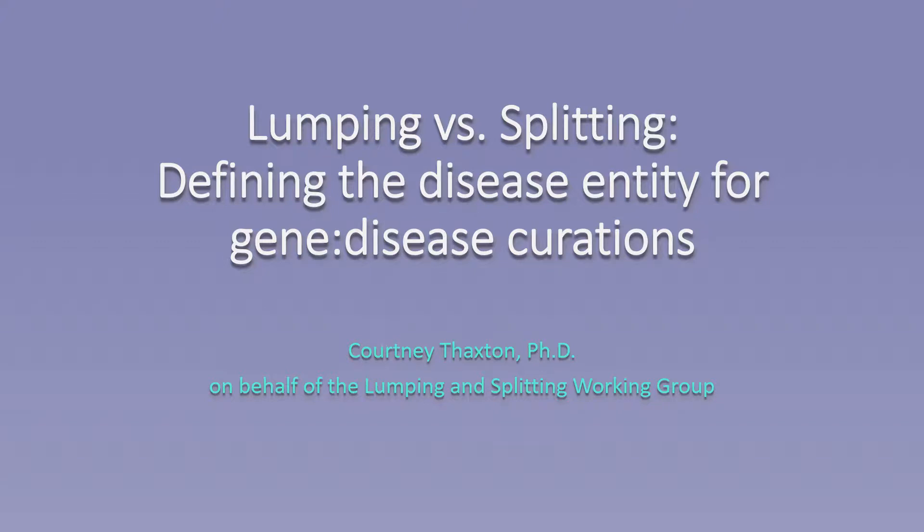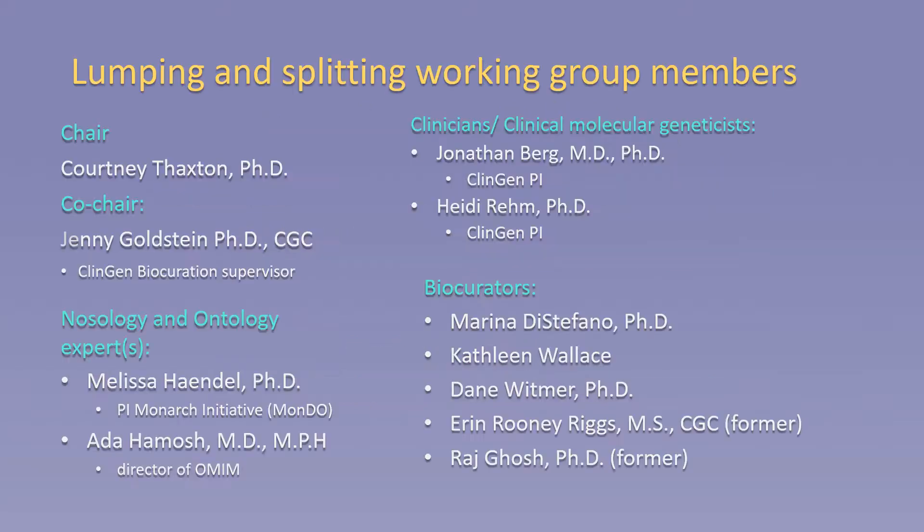This training video reviews the guidelines developed by the ClinGen Lumping and Splitting Working Group to assist biocurators in defining the most appropriate disease entity or entities to curate for any given gene. The Lumping and Splitting Working Group was formed in April of 2017 and is comprised of clinicians and diagnosticians, nosological and ontological experts, as well as biocurators.